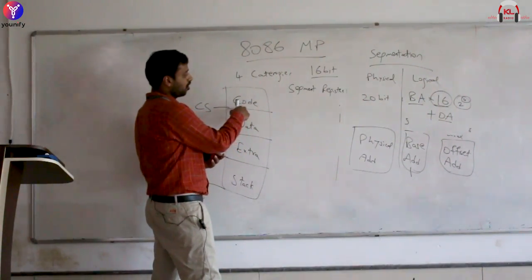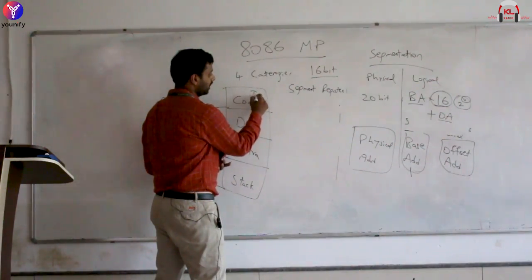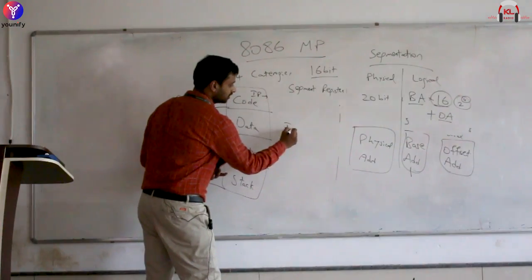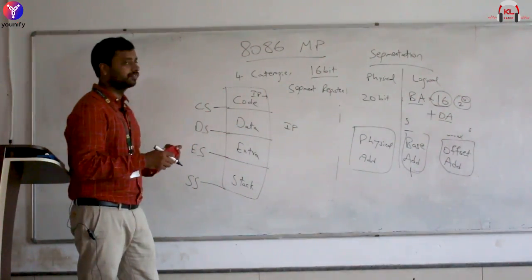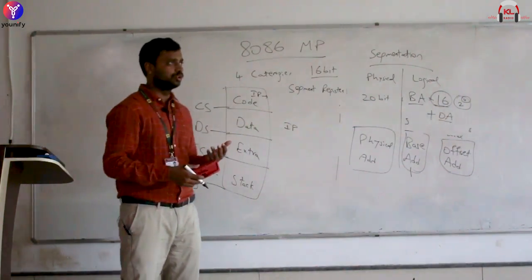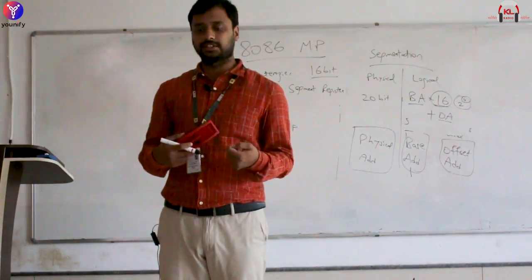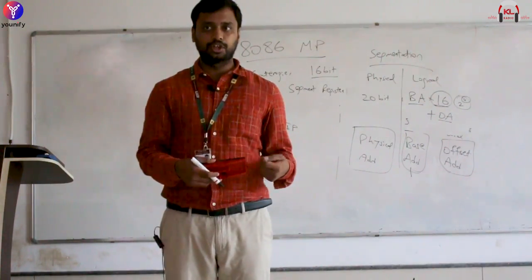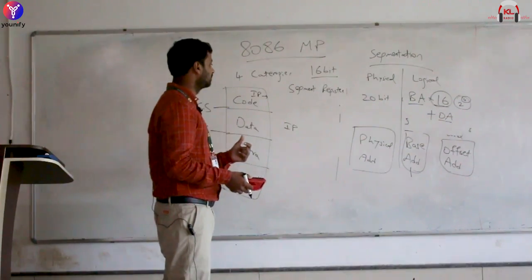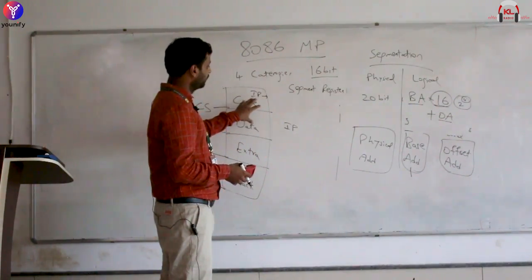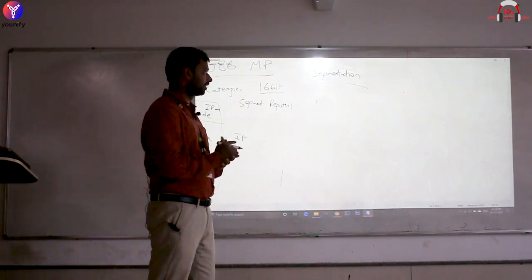For offset addresses, we have specialized registers. To hold the offset within the Code Segment, there is the Instruction Pointer (IP). IP holds the address of the next instruction to be executed. Since code executes a sequence of instructions — first instruction one, then two, then three — IP must always track the next address to go to.